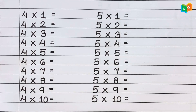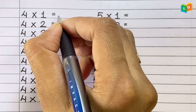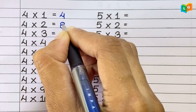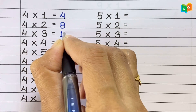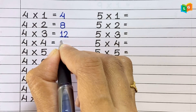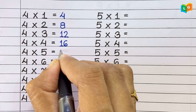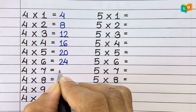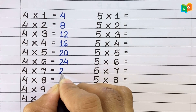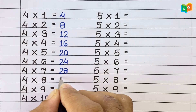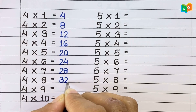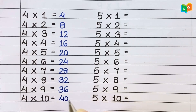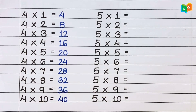Now let's see table of 4. 4 1s are 4, 4 2s are 8, 4 3s are 12, 4 4s are 16, 4 5s are 20, 4 6s are 24, 4 7s are 28, 4 8s are 32, 4 9s are 36, 4 10s are 40.